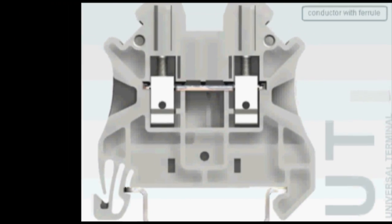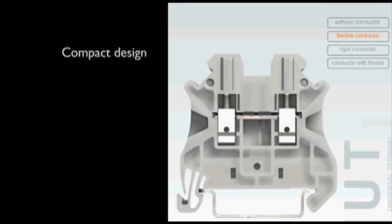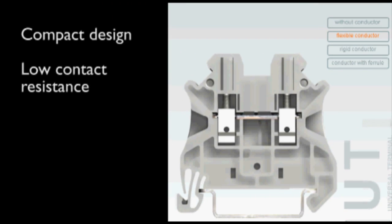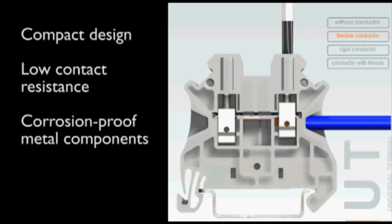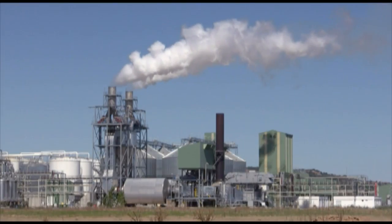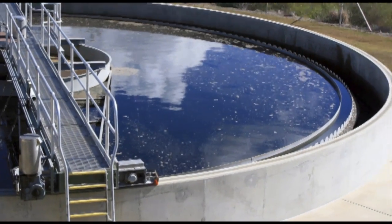UT Screw Clamp Terminal Blocks from Phoenix Contact have a compact design, low contact resistance, and corrosion-proof metal components, making them ideal for panel builders, system integrators, and OEMs in a variety of control applications and across many industries. They are also ideal for harsh and corrosive environments.